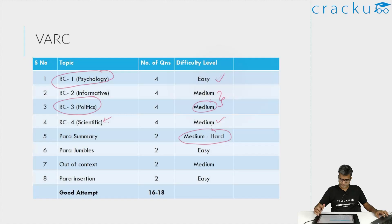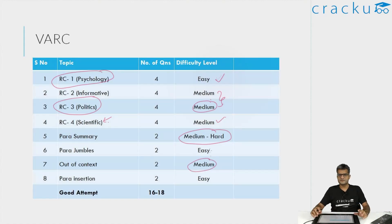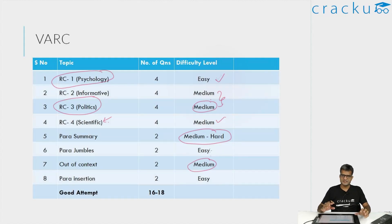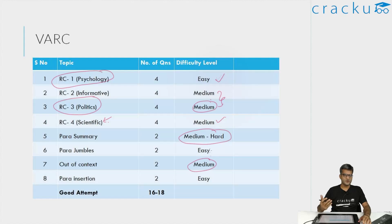Coming to the out-of-context questions, I think they were slightly on the medium side. Even though I got both questions correct, I was not 100% sure of my accuracy. I was able to get the jumbling fairly well, but it was not very easy. The questions were slightly on the medium side — I thought 'maybe this sounds good' and went with it.